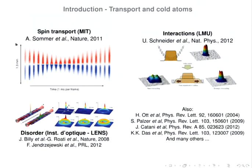Transport is a hot topic in the cold atom community these days. One can mention, among lots of work, the observation of spin transport two years ago, transport of strongly interacting Bose gas loaded into an optical lattice observed in Munich more than a year ago, and transport in the presence of disorder, strongly related to Anderson localization, work done at the Institute of Teak in Paris.